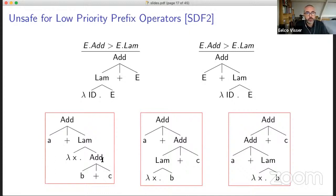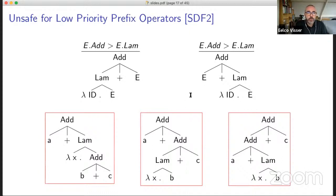But now we get that all trees for the sentence a plus lambda x b plus c are forbidden because they all match one of these patterns. This is the unsafety problem that Peter Mosses observed.